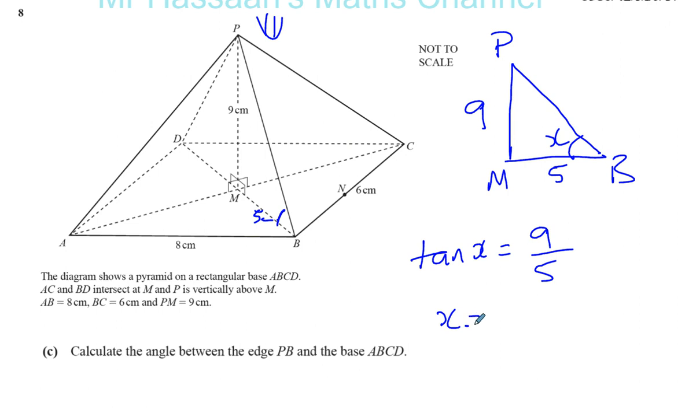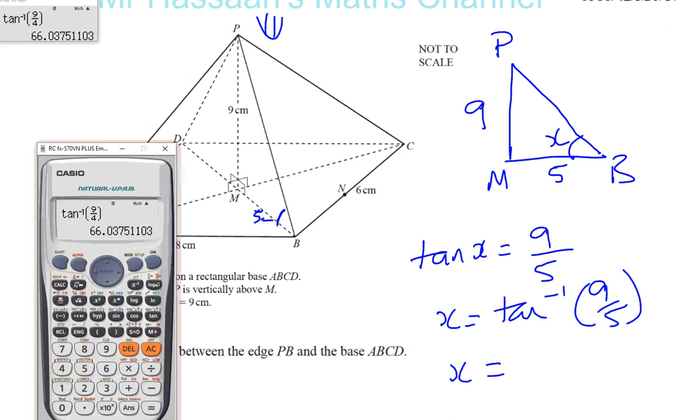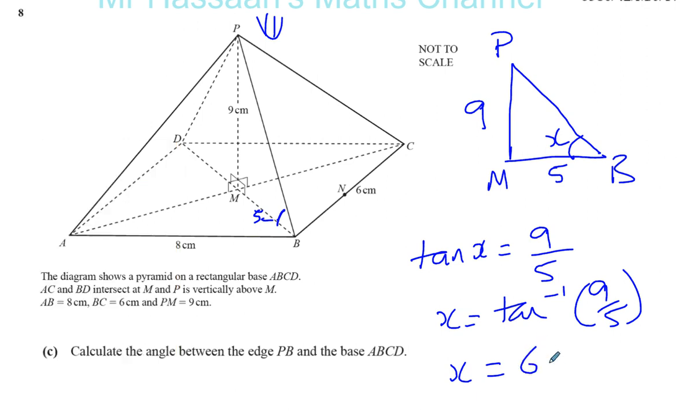So X is going to be inverse tan of nine over five. So X is going to be calculator, very similar to the last question, nine over five. Okay, that's 60.945, 60.945.